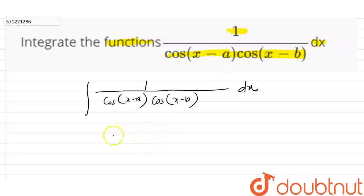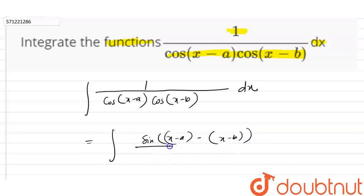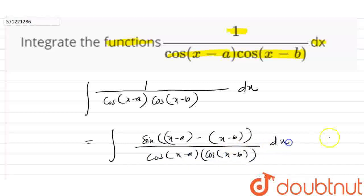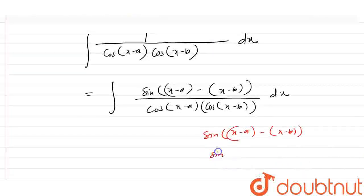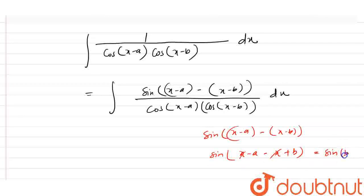We can write this as the integration of sin[(x minus a) minus (x minus b)] whole divided by cos(x minus a) into cos(x minus b) dx. When we open the bracket, this equals sin(x minus a minus x plus b). The x and x cancel each other, so this equals sin(b minus a).